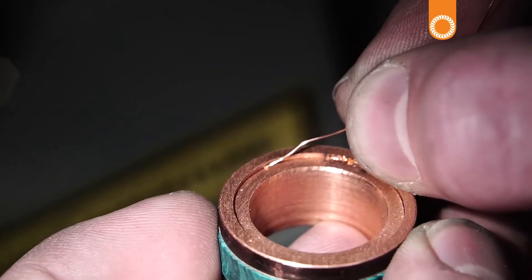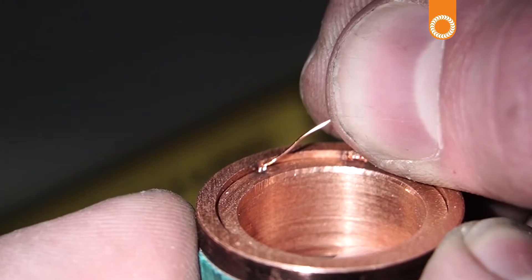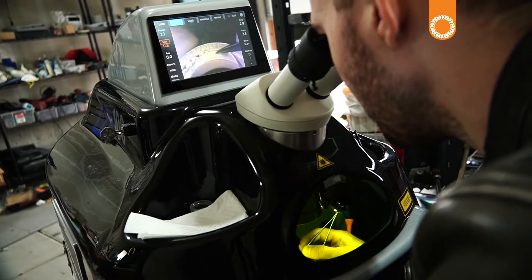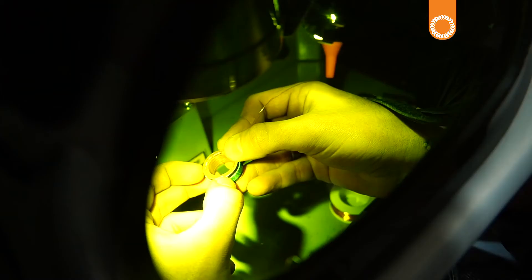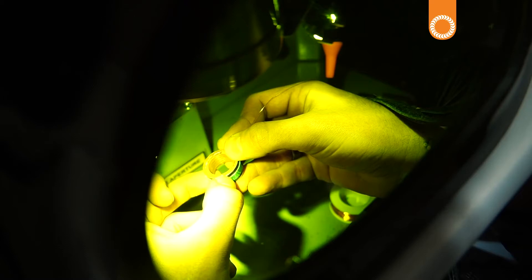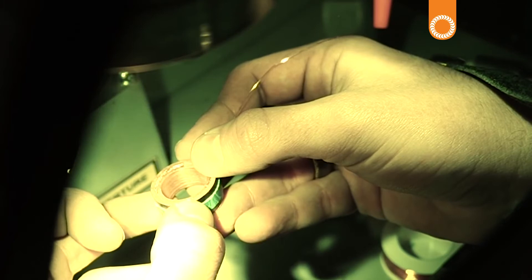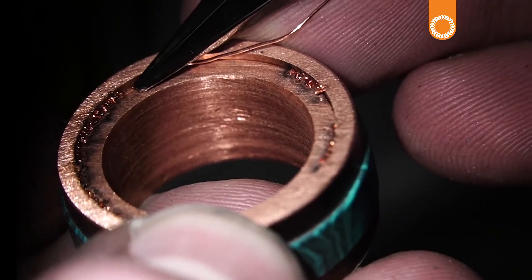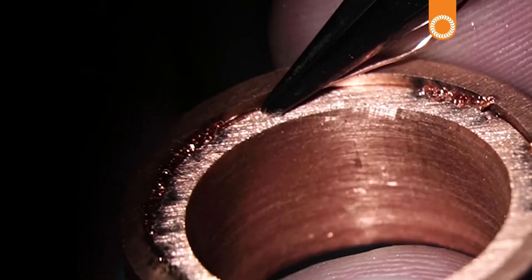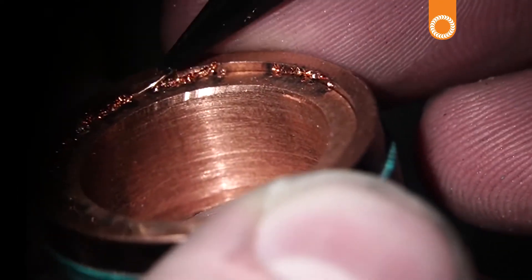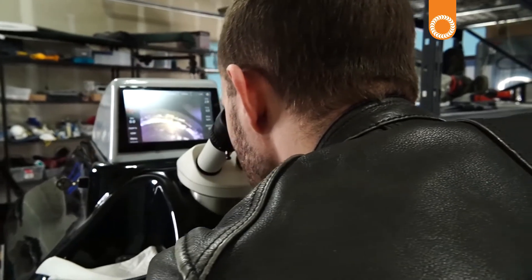Now using this filler wire, I'm able to go all the way around the ring and just completely fill in that seam. And then we'll go to the next one.